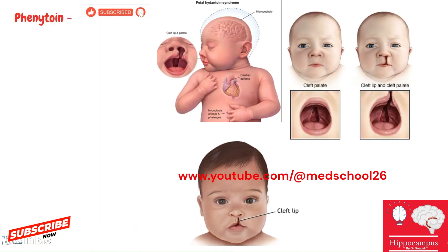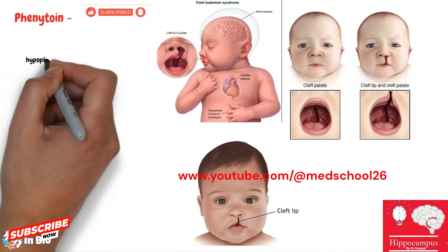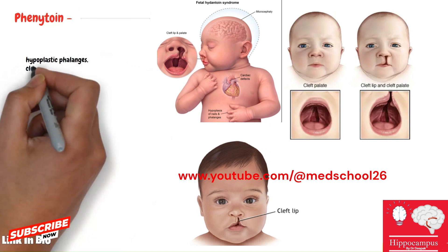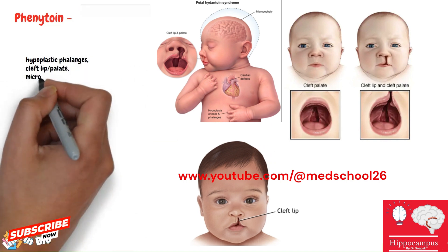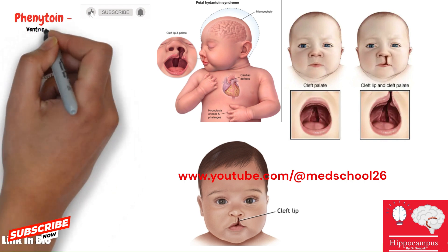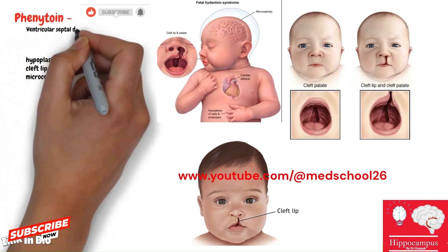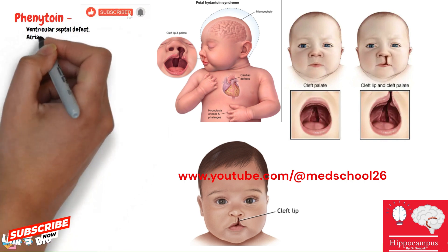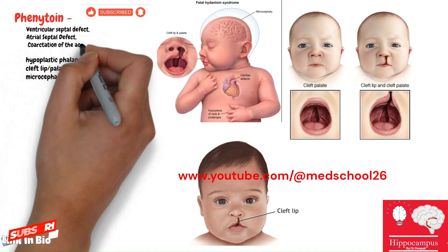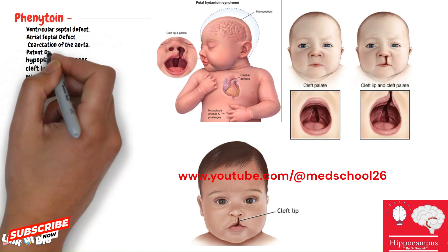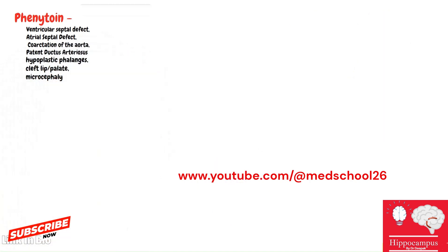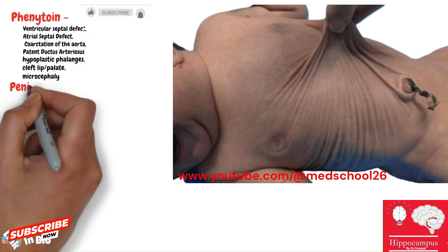Sixth: phenytoin — causes hypoplastic phalanges, cleft lip, cleft palate, microcephaly, ventricular septal defect, atrial septal defect, coarctation of the aorta, and patent ductus arteriosus.